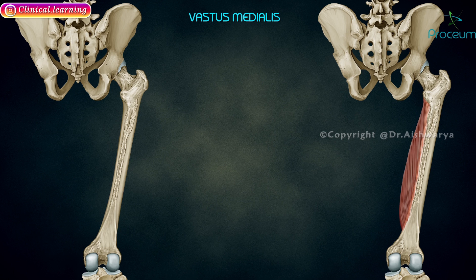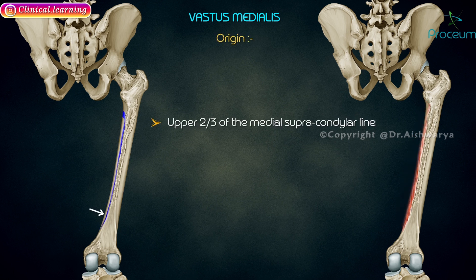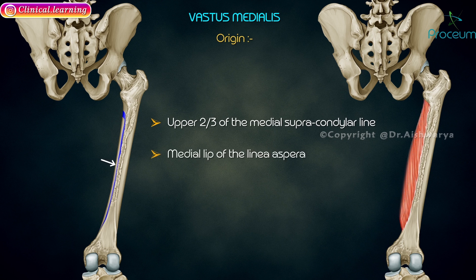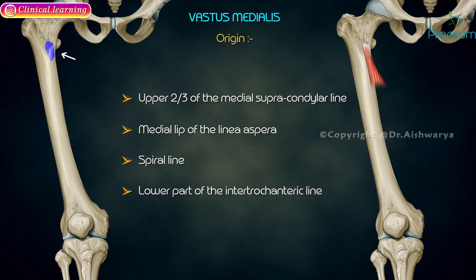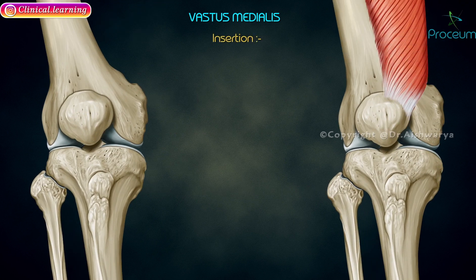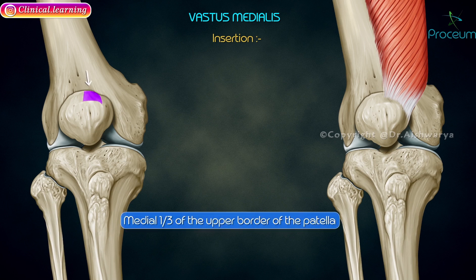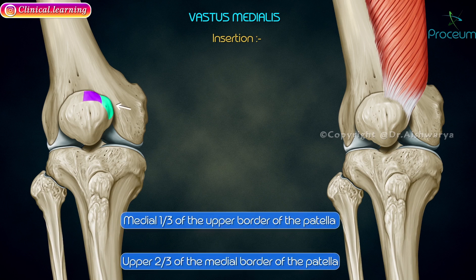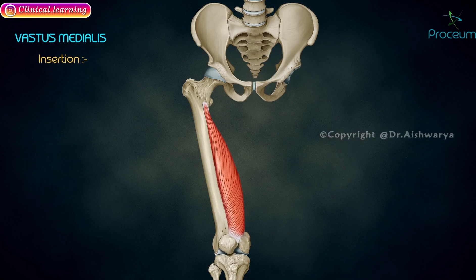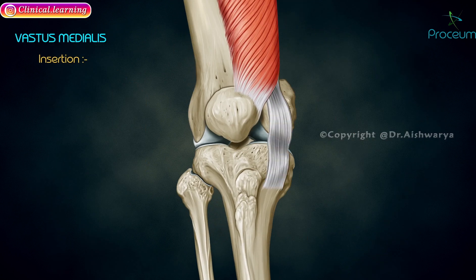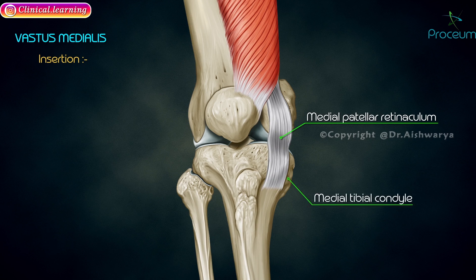Vastus medialis. It originates from the upper two-thirds of the medial supracondylar line, medial lip of the linea aspera, spiral line, and the lower part of the intertrochanteric line. Insertion is at the medial one-third of the upper border of the patella and upper two-thirds of the medial border of the patella. It also gives off a fibrous expansion called the medial patellar retinaculum, which is attached to the medial tibial condyle.